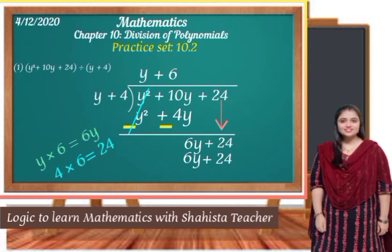Again we do subtraction. We have 6y and 24, so apply minus sign. 6y minus 6y is 0, and 24 minus 24 is again 0. So both terms get cancelled — 6y minus 6y is cancelled and 24 minus 24 is also cancelled.